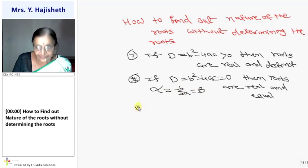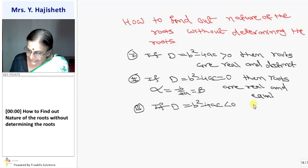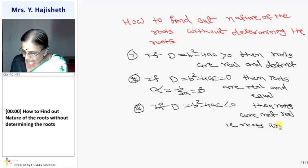And third condition: if your D, that is b square minus 4ac, is less than 0, then roots are not real. Because square root of a negative number is not possible. That is, roots are not possible. Or you can say, roots do not exist.